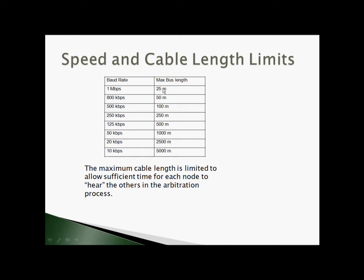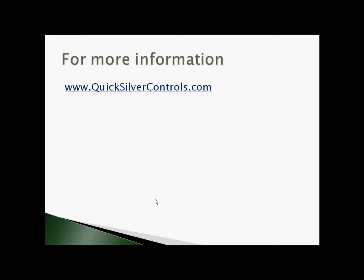As we lower the data rate, the maximum bus length increases — all the way up to about 5,000 meters if running at only 10 kilobits per second. For more information, see www.quicksilvercontrols.com for additional videos and also for the CANopen manual.